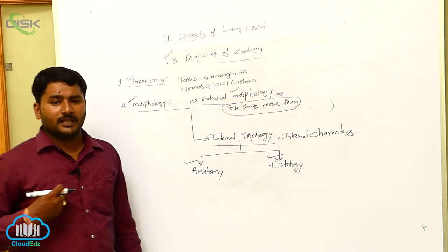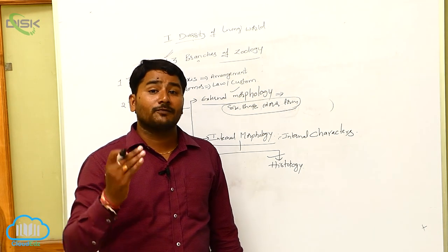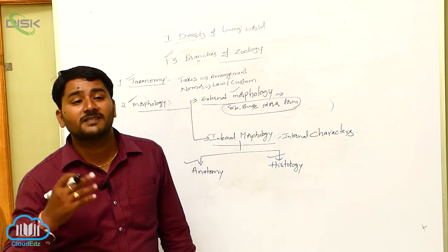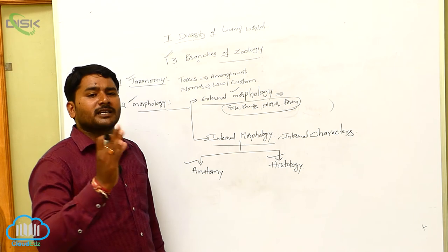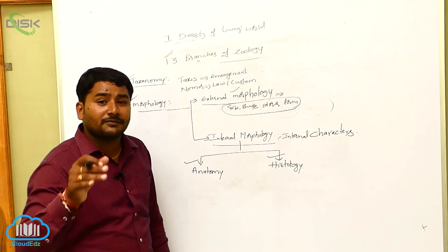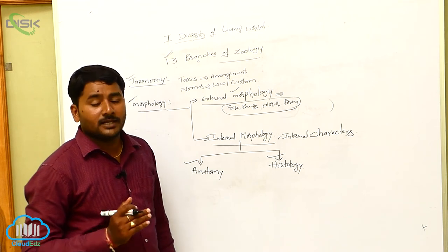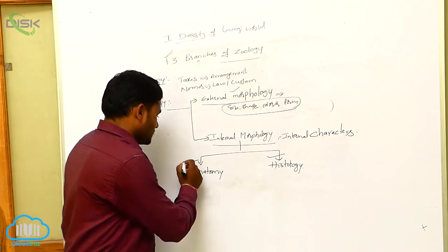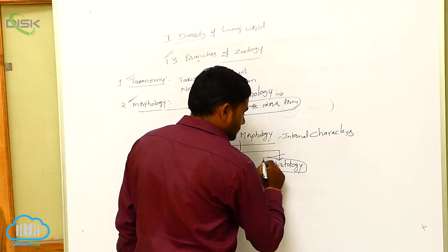Anatomy is the study of the internal arrangement of various body parts which are visible to the eye. For example, anatomy of the heart or anatomy of the liver — where these organs are located within the body. The internal arrangement of different body parts is called anatomy.